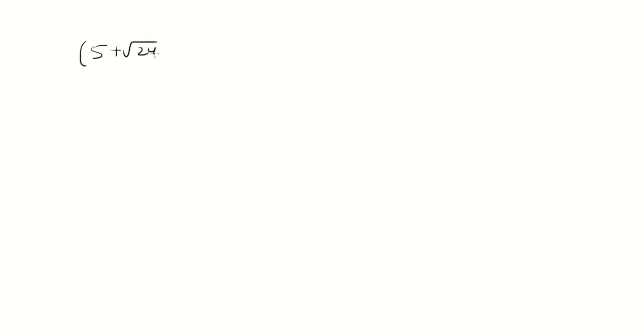Let's solve the equation: 5 plus the square root of 24 raised to the x, plus 5 minus the square root of 24 raised to the x, equals 98.